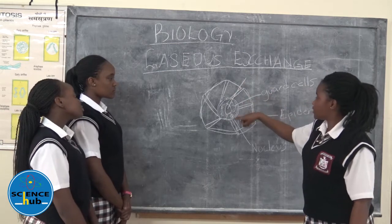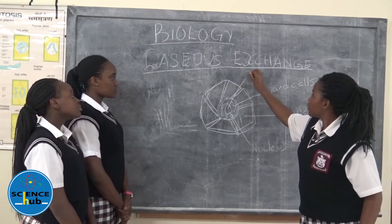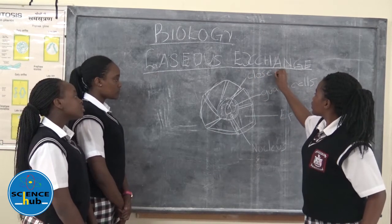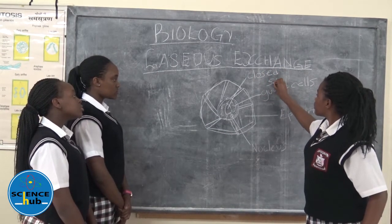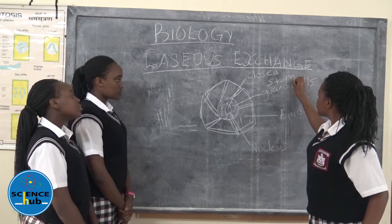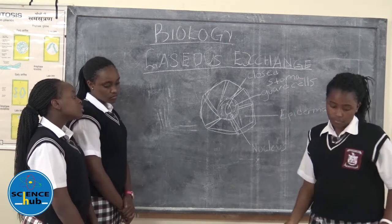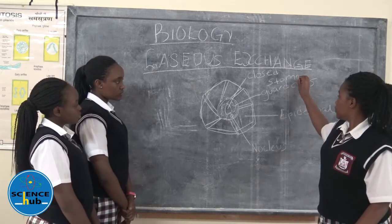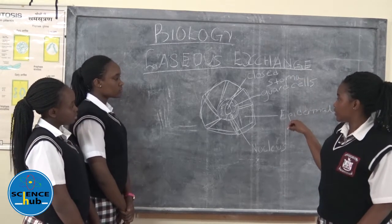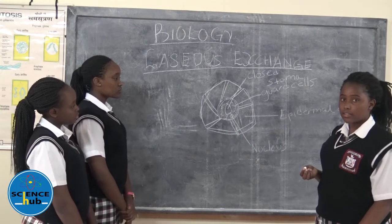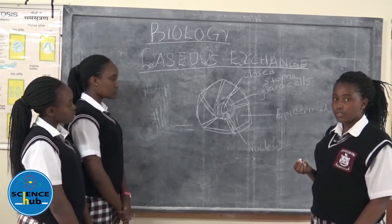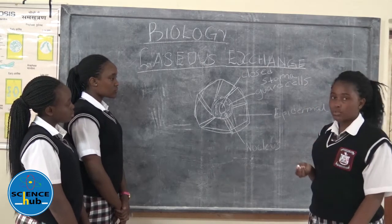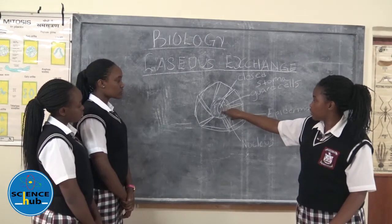This is a closed stomata. The purpose of stomata in the plant — it allows gaseous exchange to take place. And the guard cells control the opening and closing of the stomata.